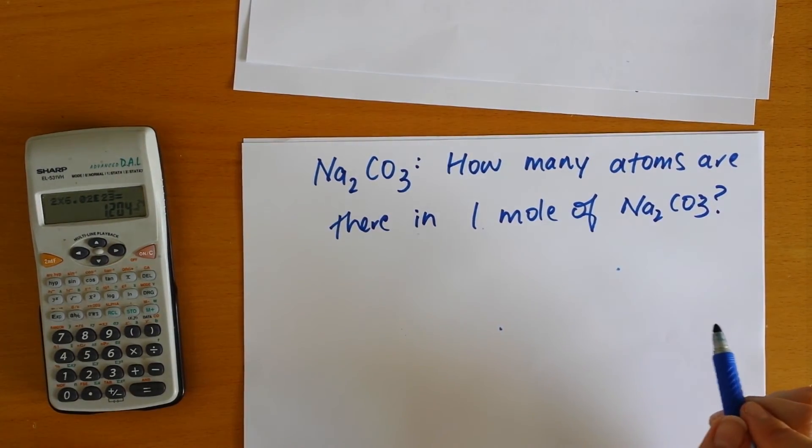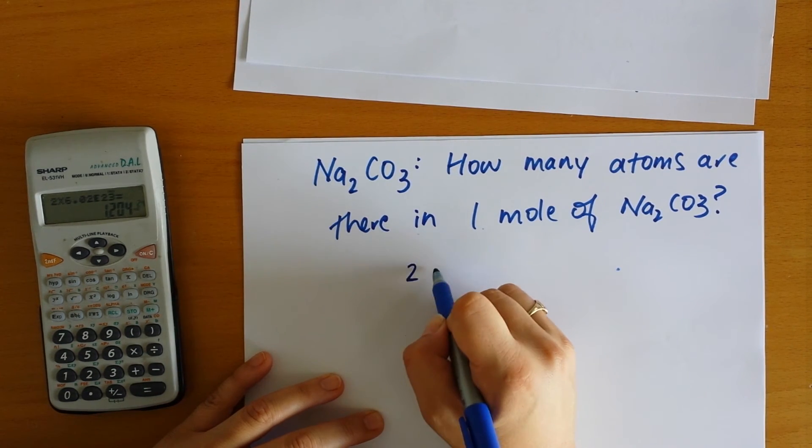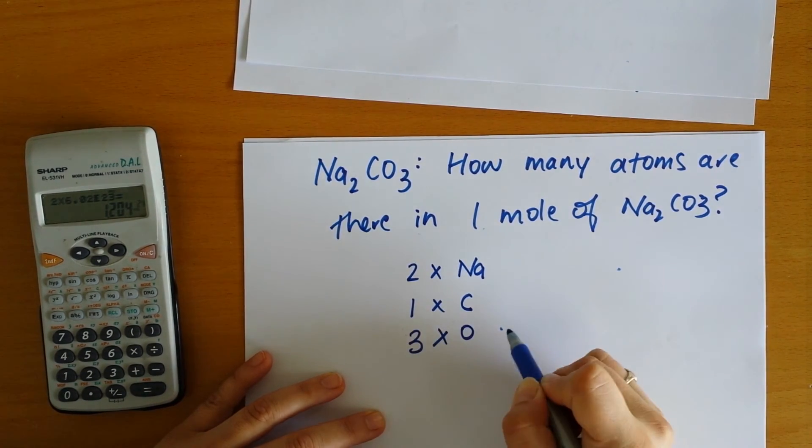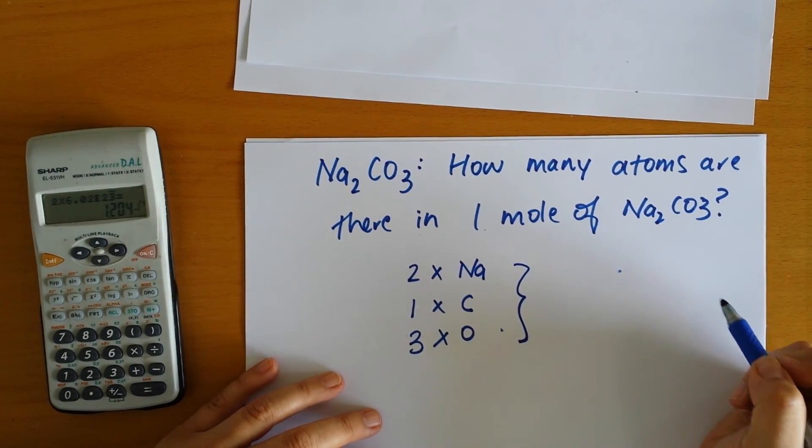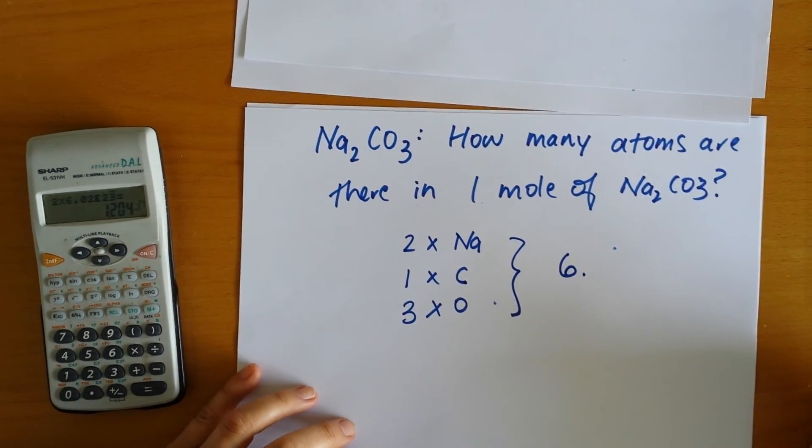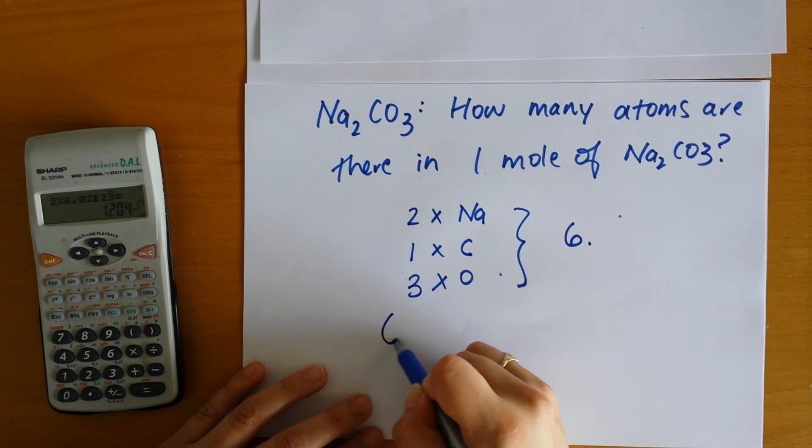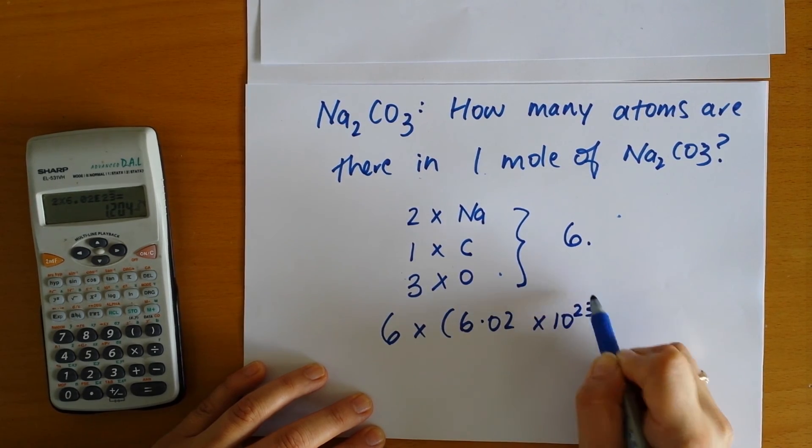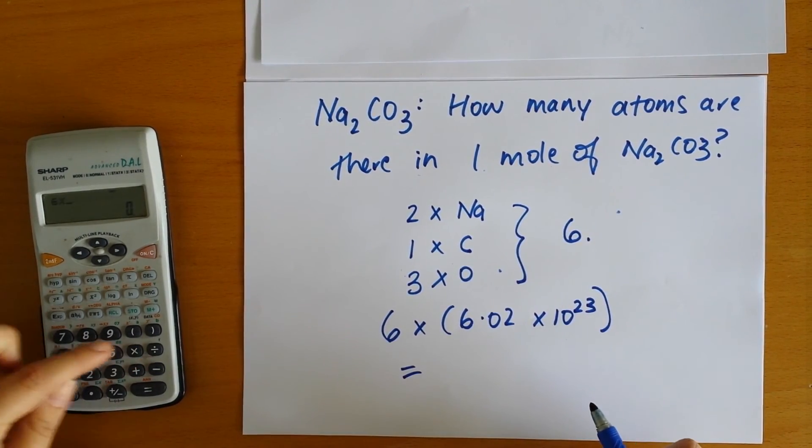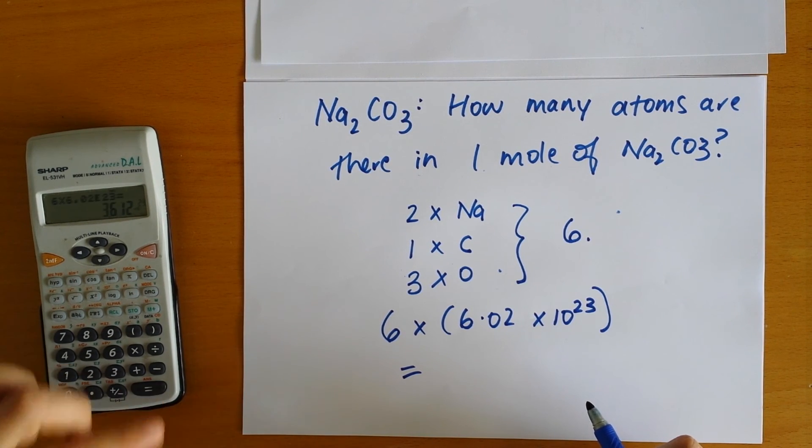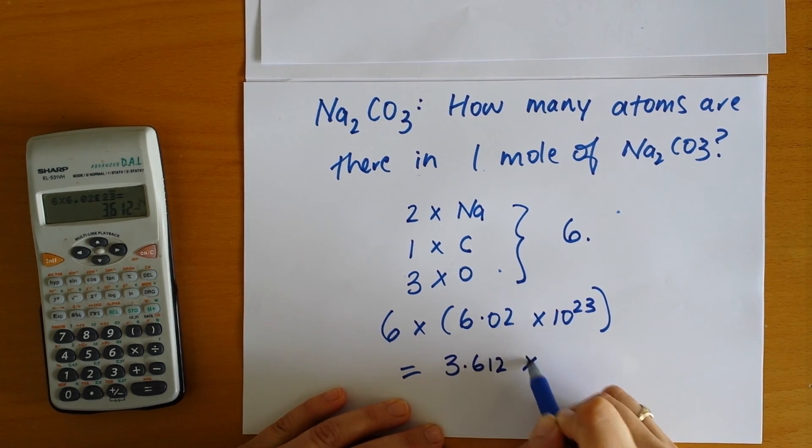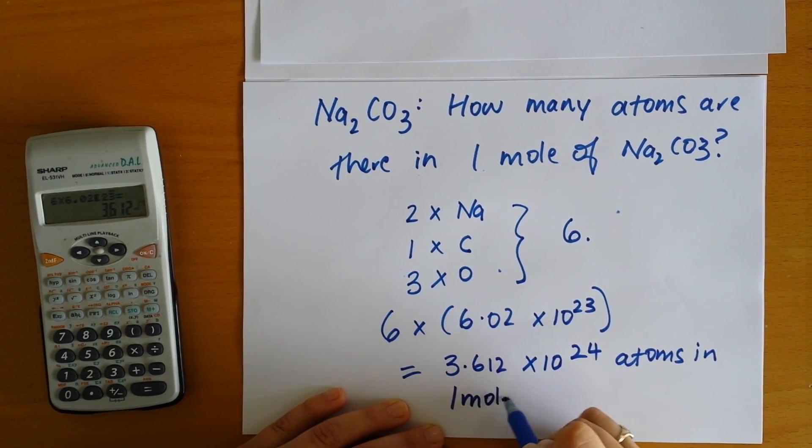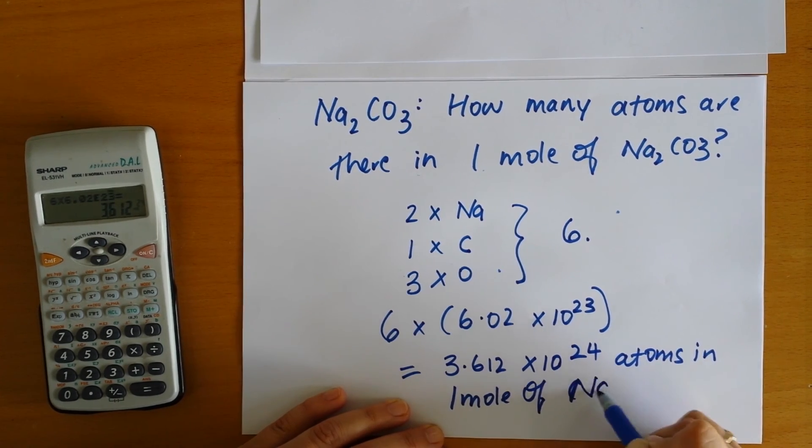Now to do this we actually need to figure out how many atoms we have in total. So we have 2 times sodium, we have 1 times carbon, and we have 3 times oxygen. So the total number of atoms that we have in this case is 6. So to calculate out how many atoms we have in 1 mole of sodium carbonate, we actually need to times the Avogadro constant by 6. So 6 times 6.02 times 10 to the 23. So that gives us 3.612 times 10 to the 24 atoms in 1 mole of sodium carbonate.